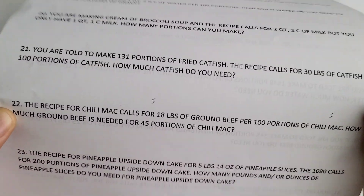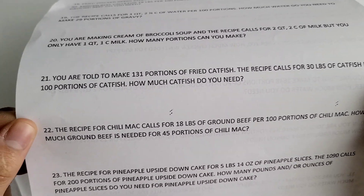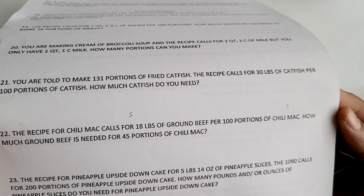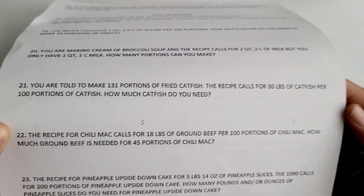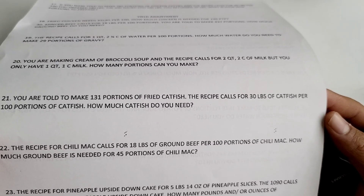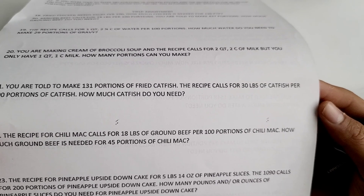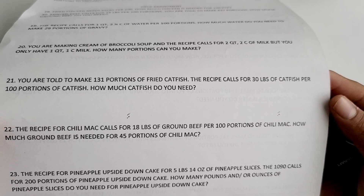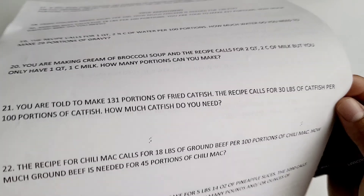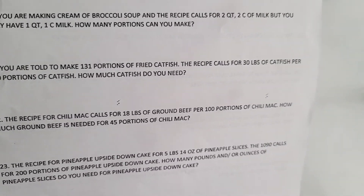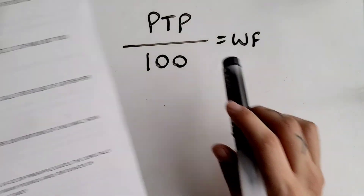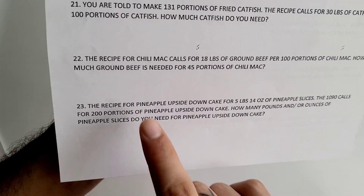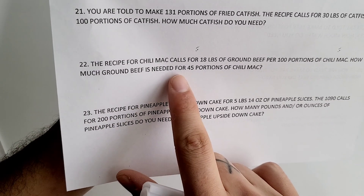Number 22: the recipe for chili mac calls for 18 pounds of ground beef per 100 portions. How much ground beef is needed for 45 portions of chili mac? Again, the first thing you want to do is find your working factor using this formula. Our portions to prepare is 45 portions, because that's how many portions of chili mac you want to make.